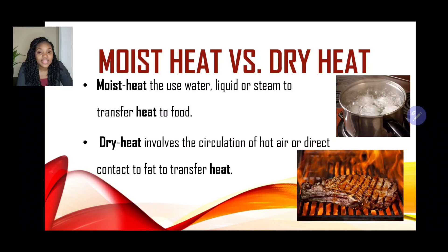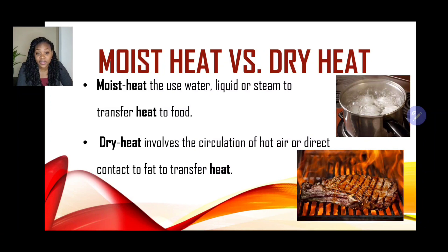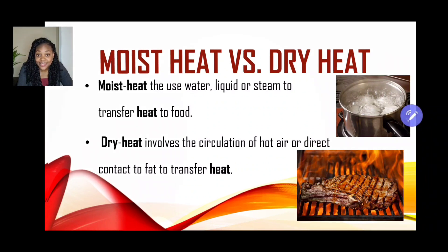The next category of heat is dry heat. As the name suggests, this involves the circulation of air — so no moisture. Dry heat involves the circulation of hot air, or may also include direct contact with fat to transfer heat.